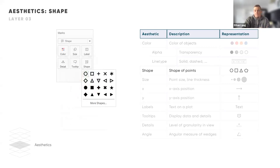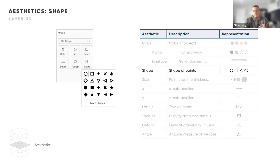The next aesthetic I think is extremely powerful is shape. Shape can be an extremely good way of drawing the user's attention to something. The example I always think of is if I was looking at a scatterplot of different IT companies and I encoded the shape as each company's logo — that could really draw insight a lot quicker for the audience if they're familiar with those brands.